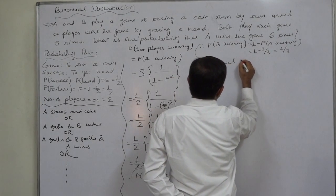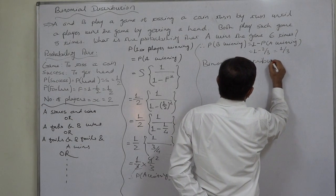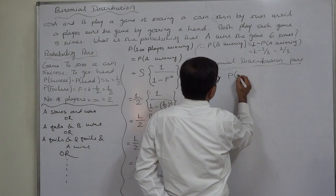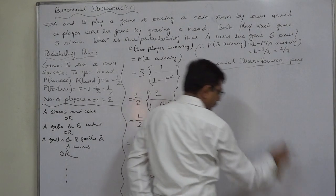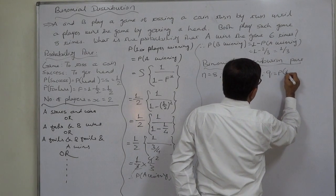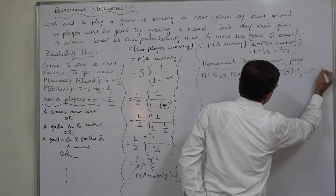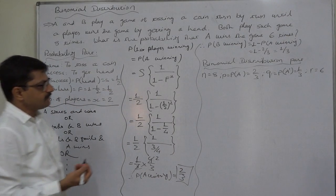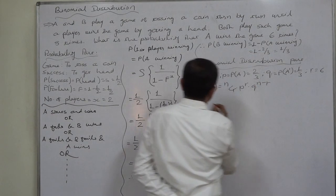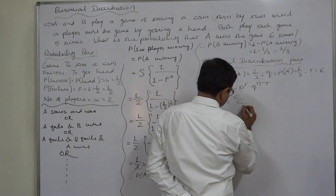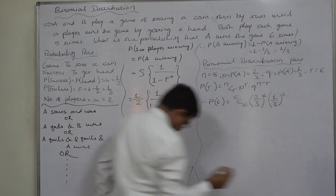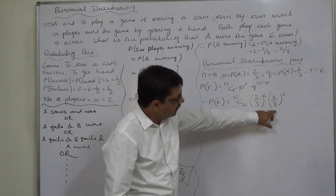Now for the binomial distribution part: the game is played 8 times, so N is 8. P — that is probability of A winning the game — is 2 by 3. Q will be probability of B winning the game, which is 1 by 3. And R is 6 because we want to find the probability that A wins the game 6 times out of 8. P of R successes is NCR into P raised to R into Q raised to N minus R. Therefore, probability of 6 successes of A equals 8C6 into 2 by 3 raised to 6 into 1 by 3 raised to 2. Please remember here P and Q will not be 1 by 2 and 1 by 2.